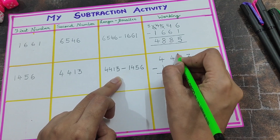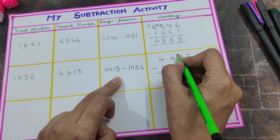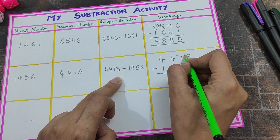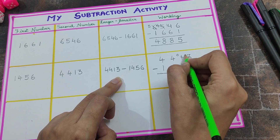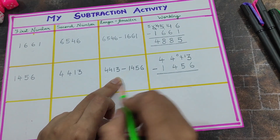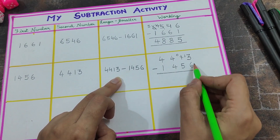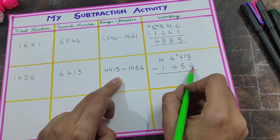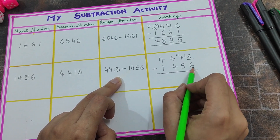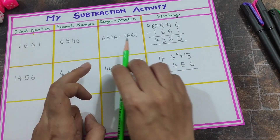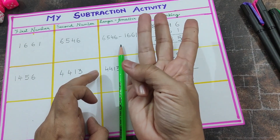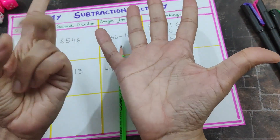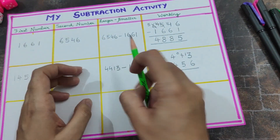Three minus six: three is smaller than six, so we go to the neighbor. The neighbor becomes zero because it gives one ten to this column, making it thirteen. Thirteen minus six — keep six in your mind, count: seven, eight, nine, ten, eleven, twelve, thirteen — the answer is seven.